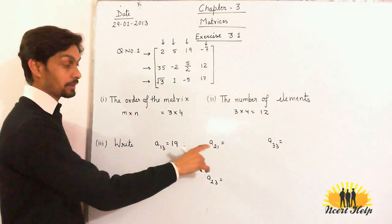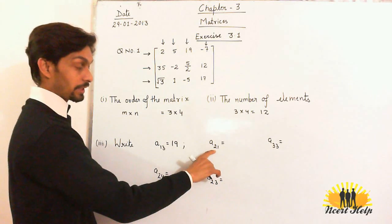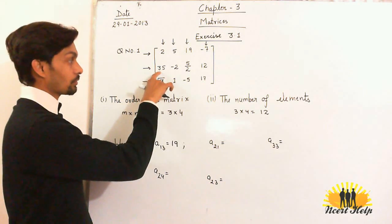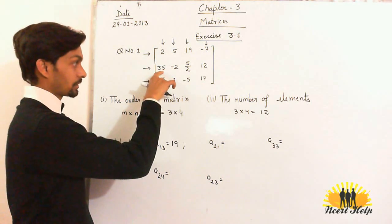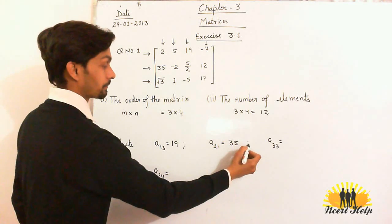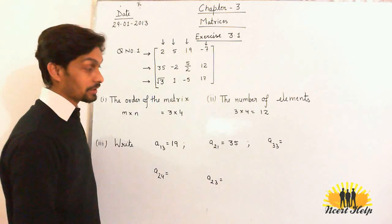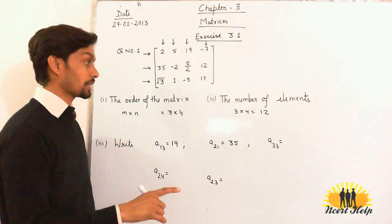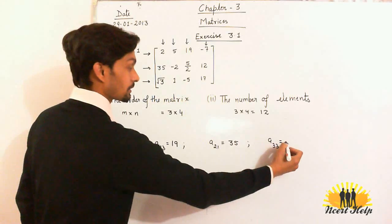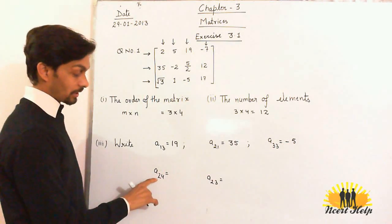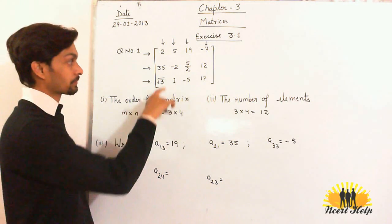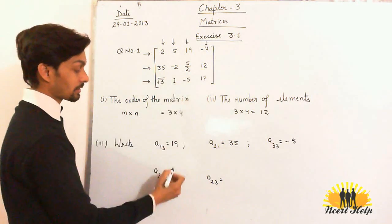Similarly, a₂₁ means the second row, first column — that gives you 35. Similarly, a₃₃ means the third row, third element — you can see the third element in the third row is minus 5. Now a₂₄ means the second row, fourth element — the fourth element in the second row is 12.